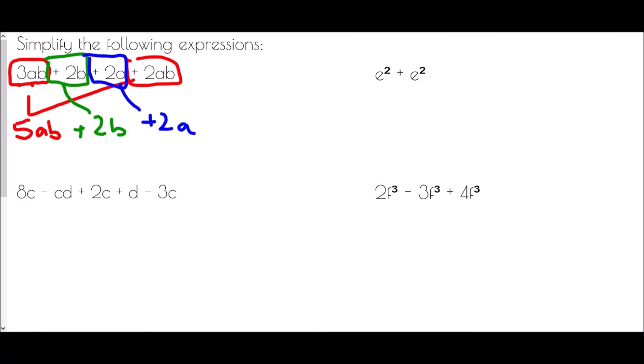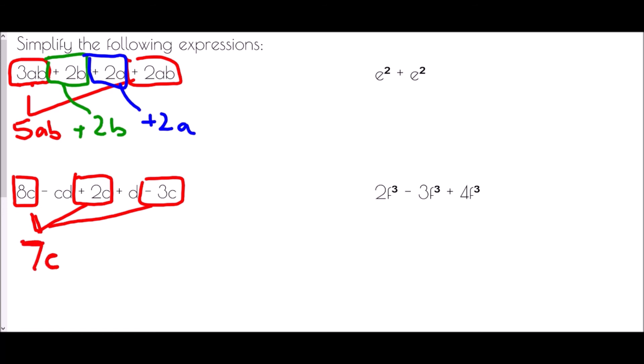In the second question: 8C take away CD plus 2C plus D take away 3C. I identify the like terms: 8C, plus 2C, and take away 3C. Bringing them together: 8C plus 2C is 10C, then take away 3C gives 7C. The negative CD has nothing to match, so it remains as take away CD. The plus D also has nothing to match, so it remains as plus D.